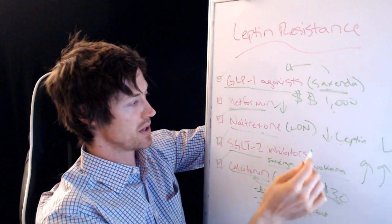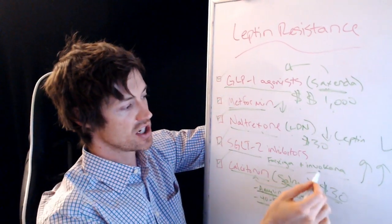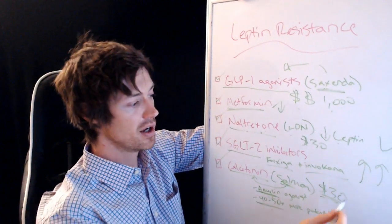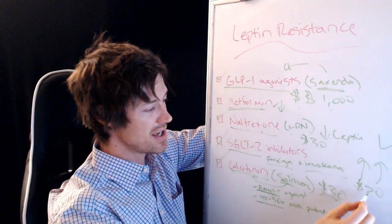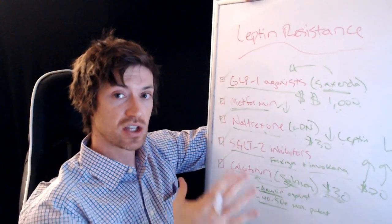Again, GLP-1 agonist, very expensive. Metformin, really cheap. Naltrexone is probably about 30 bucks per month. And SGLT2 inhibitors, if you can get a coupon, are about 20. So we're not talking crazy expensive except for this one. And unfortunately it is the most effective in my opinion, but it kind of just depends on you. So I want to hear from you guys. If you have leptin resistance, if you've used any of these, leave your comments below.